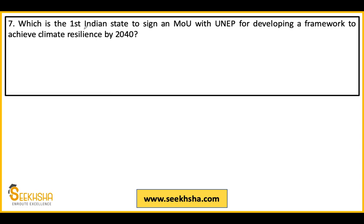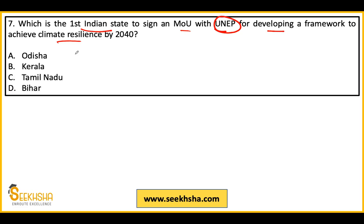Seventh question: Which is the first Indian state to sign an MOU with the United Nations Environment Programme for developing a framework to achieve climate resilience by 2040? The answer is option D — Bihar is the first state which has signed an MOU with the United Nations Environment Programme.